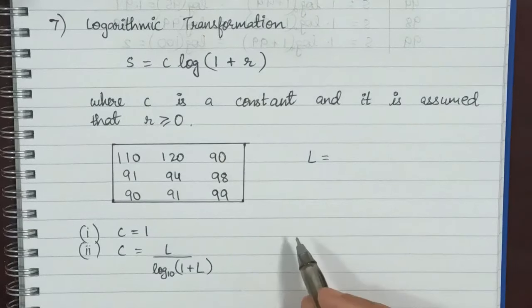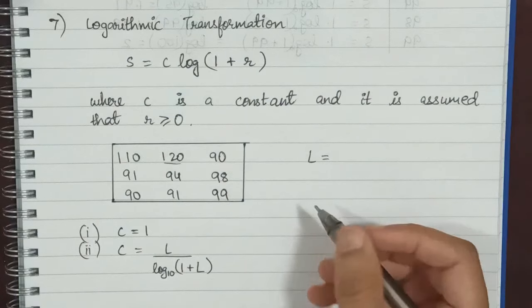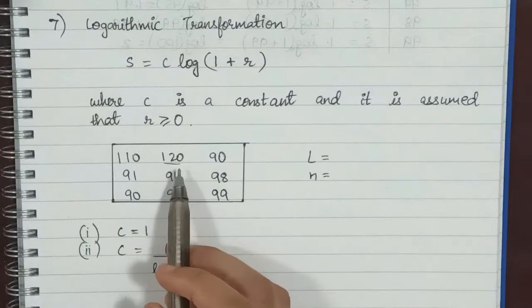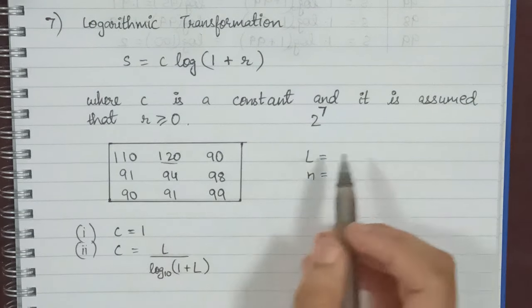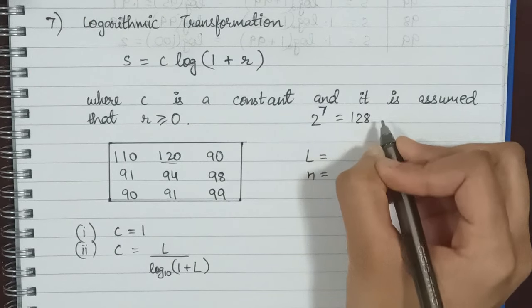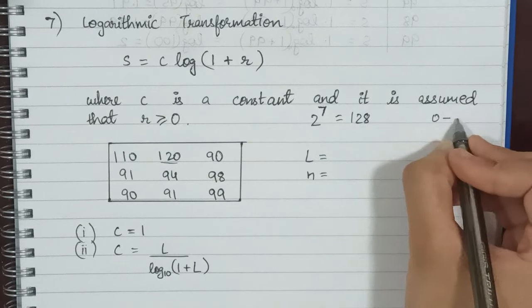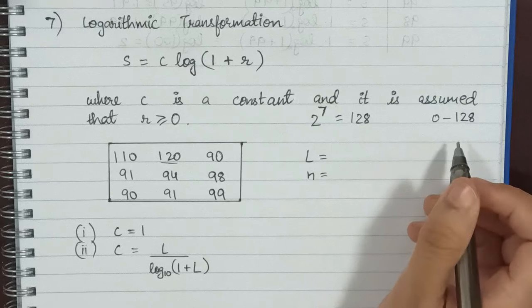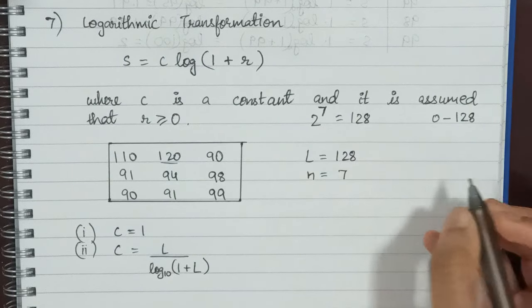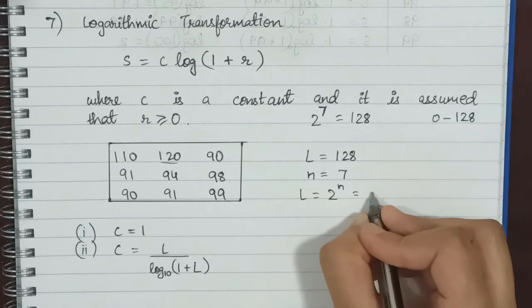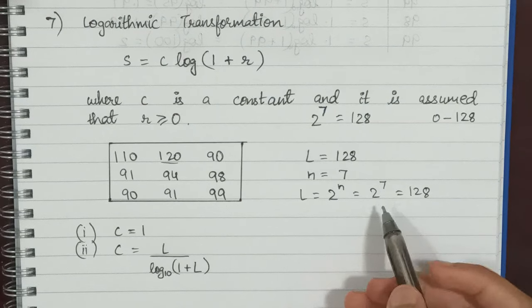Now suppose we have an image. To calculate L, we take the greatest pixel value, which is 120. We represent pixel values as powers of 2. Since 2^7 = 128 and 120 is less than 128, we take L = 128, which gives us n = 7, because L = 2^n.